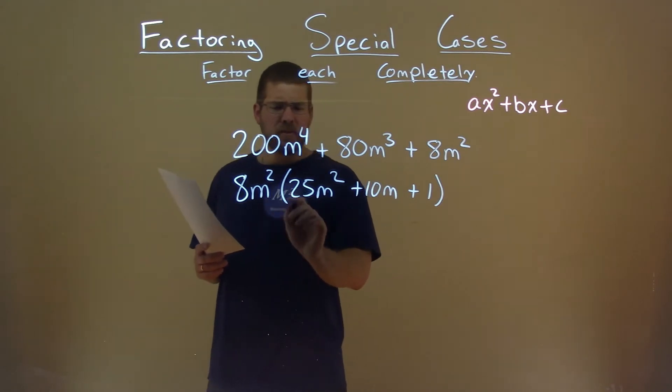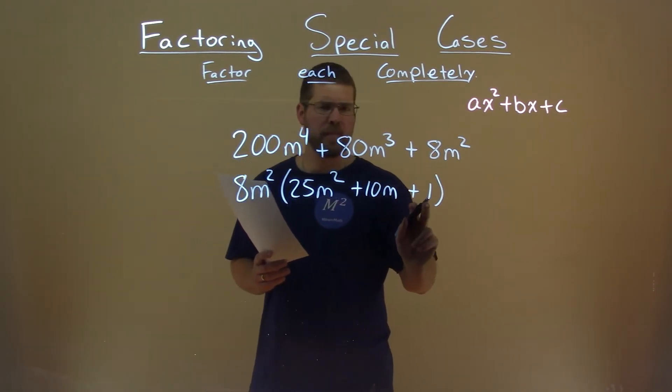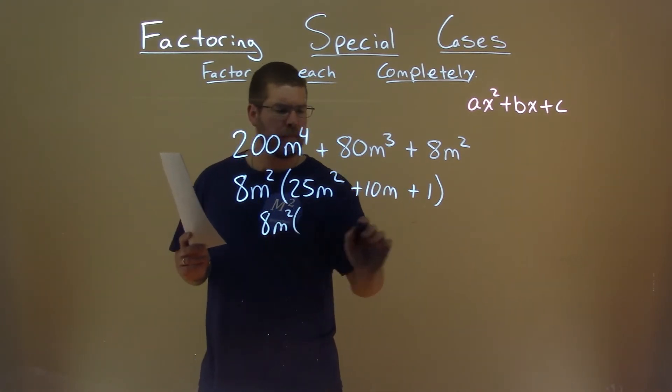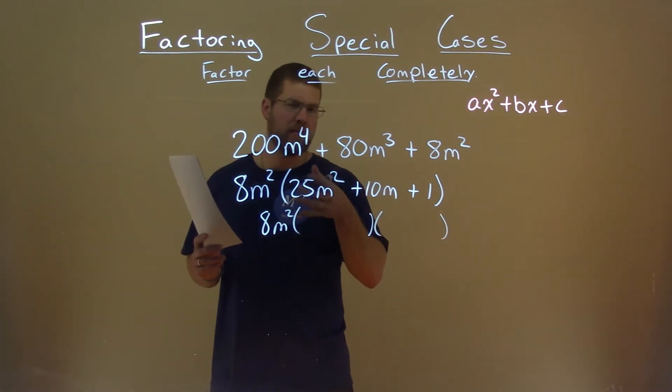So let's look at this first part, 25m squared, and then this 1. Both are perfect squares. Meaning, if I take the square root of each one, I'll get a number that's easy there, an integer.